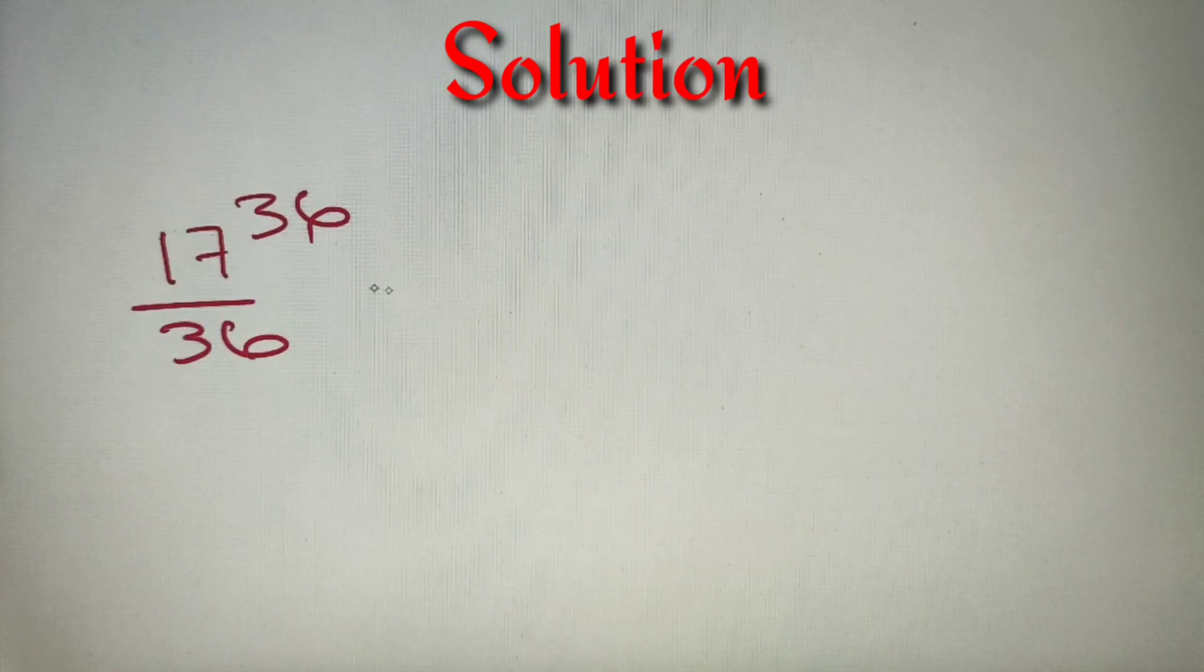According to the given question, we have to find the remainder when 17 raised to power 36 is divided by 36. If we have to find a remainder of a number raised to a higher power, it is better to make the number smaller, find the remainder, and then raise the remainder to the remaining power.